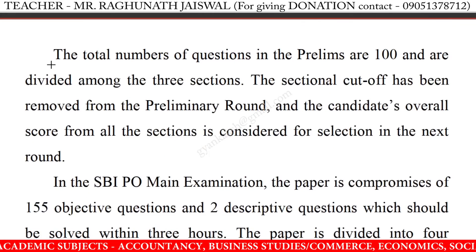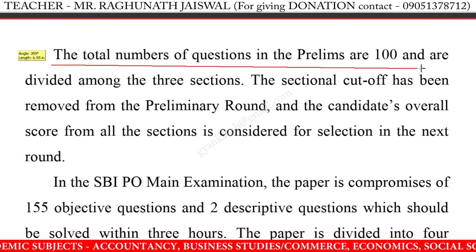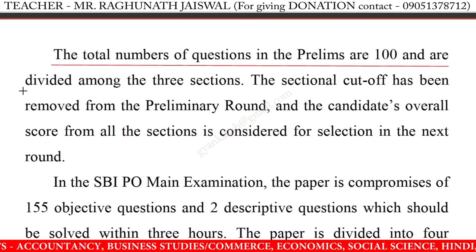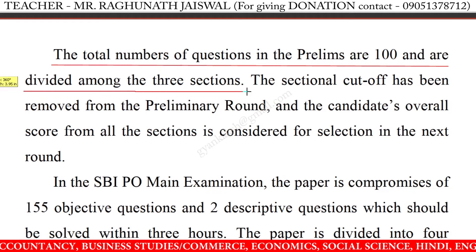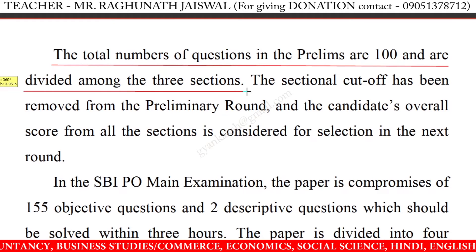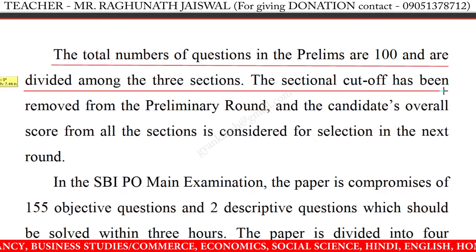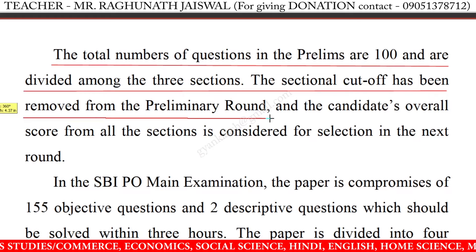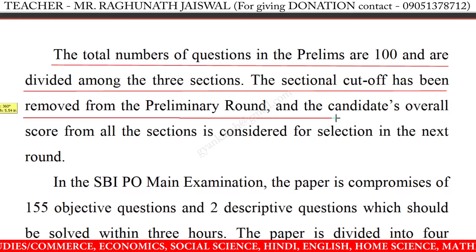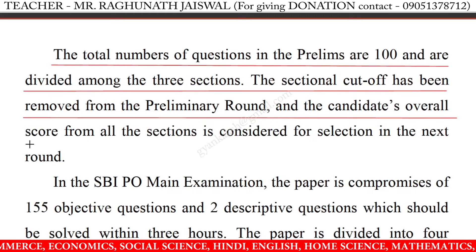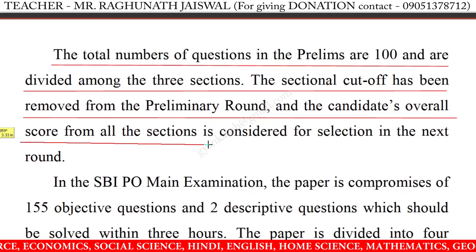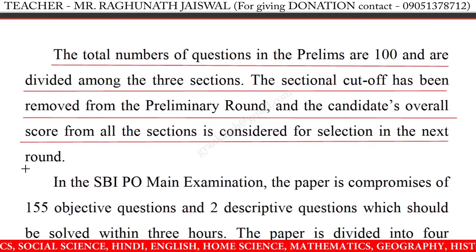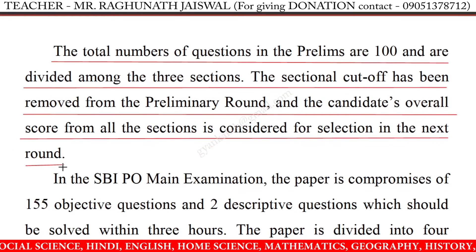The total number of questions in the prelims is 100, divided among three sections. The sectional cutoff has been removed from the preliminary round, and the candidate's overall score from all sections is considered for selection in the next round.